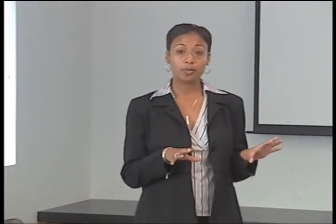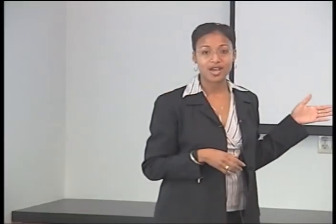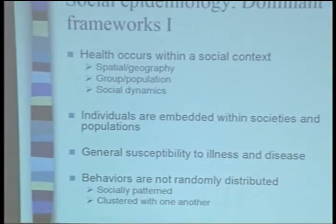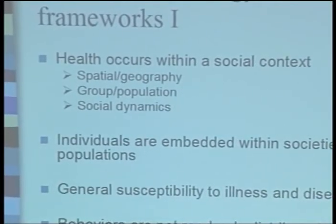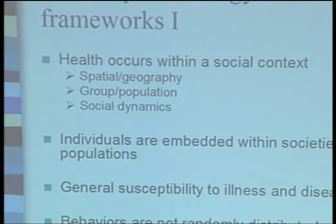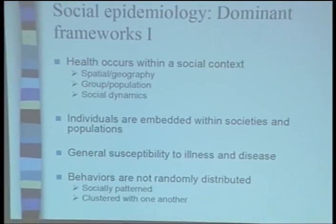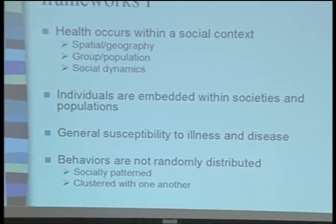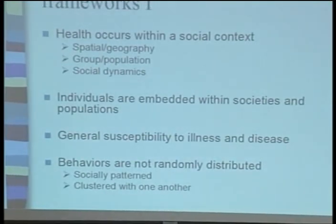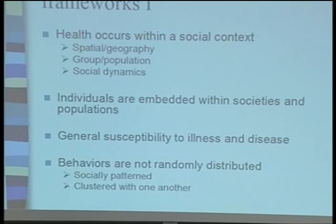What I'd like to do now is shift and talk about some of the dominant frameworks from the field of social epidemiology. Health occurs within a social context that may be defined spatially by geography, by group or population, or by social dynamics and social systems. Individuals are embedded within societies and populations — we don't exist just as individuals. It's about understanding how individuals shape their environment and, in turn, how those environments are shaped by individuals and the interaction of groups of people within those environments.